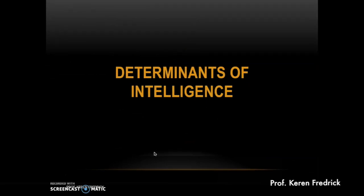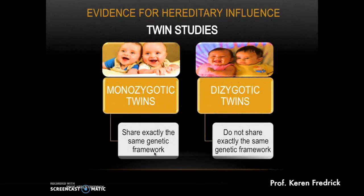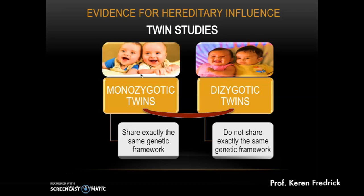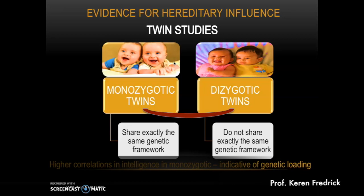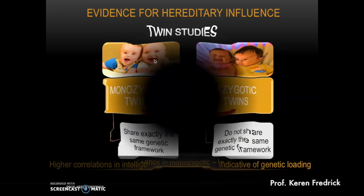Now let's look at the determinants of intelligence — is it hereditary or environmental? Evidence from heredity includes twin studies examining monozygotic (identical) and dizygotic (fraternal) twins. Monozygotic twins share the same genetic framework, while dizygotic twins are more like siblings. A higher correlation in IQ scores among monozygotic twin pairs compared to dizygotic twin pairs indicates genetic loading, and such evidence does show higher genetic loading in monozygotic twins, suggesting intelligence has a genetic component.